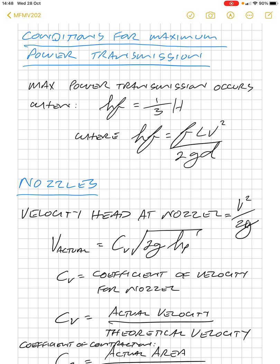So, our friction loss in the pipe is equal to FLV squared over 2DG, as before. So, it's important to remember that our friction head loss is one-third of the total input head for maximum power transmission.